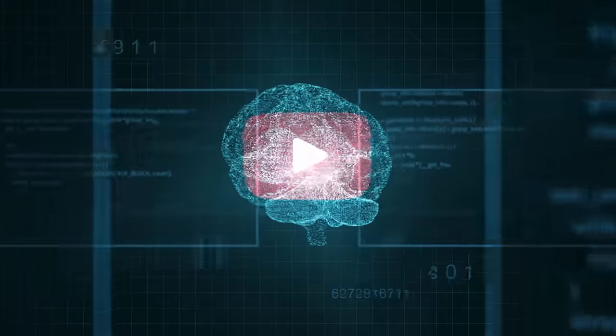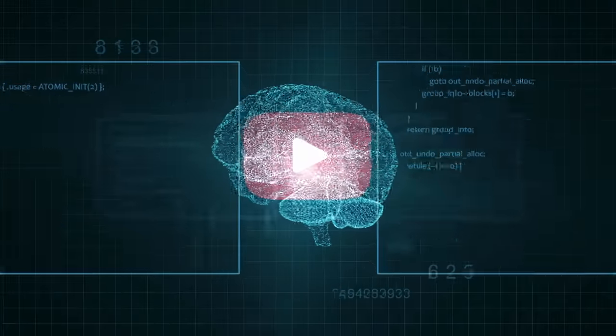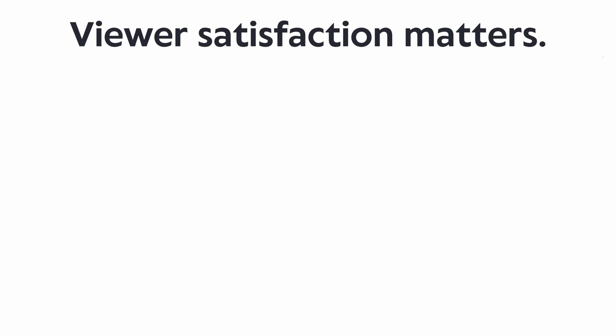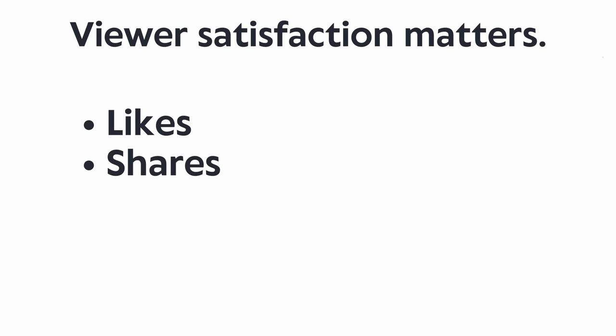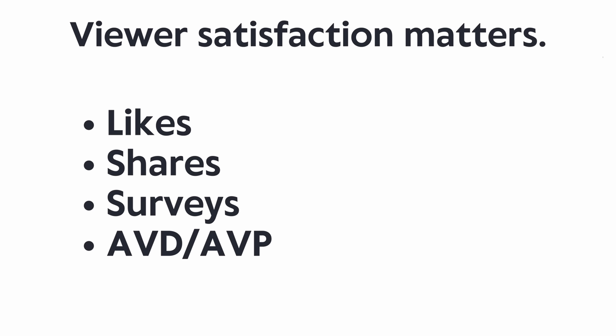The second takeaway is that viewer satisfaction matters. Ultimately, you want to make the best videos possible, but the YouTube algorithm is not watching your videos and seeing if they're good or not, because sometimes that's subjective and it's hard to know. So some of the signals that YouTube actually looks at are your likes, your shares, the surveys, and also your average view duration or average view percentage.